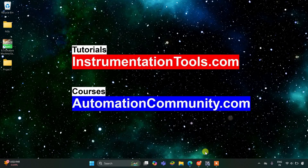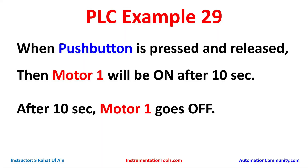Hello everyone, welcome to Automation Community. Today in this video we are going to discuss an example in which we will control a motor with a push button. We will also be using timers. Example 29: when push button is pressed and released, Motor 1 will turn on after 10 seconds, and after 10 seconds Motor 1 goes off.